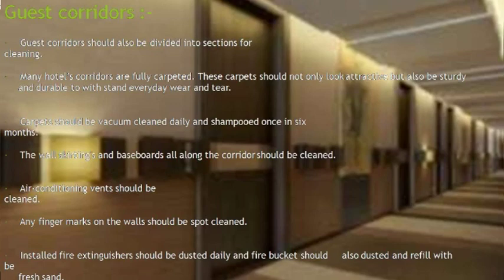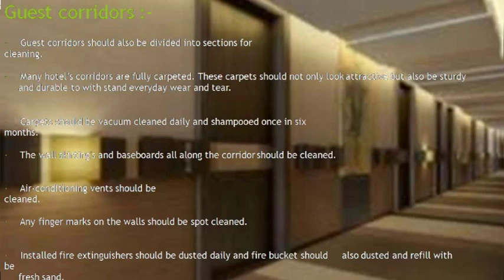The banquet halls: sweep and mop the floor before an event; if the area is carpeted, a vacuum cleaner should be used. Damp dust or suction clean the furniture. Lighting fixtures should be cleaned or checked weekly, and chandeliers should be brought down to clean every six months. Flower arrangements, mineral water, glasses, and other specific requirements such as pencils and notepads should be provided and arranged neatly in place. Walls should only need to be spot cleaned in case of staining, but walls should be washed periodically.